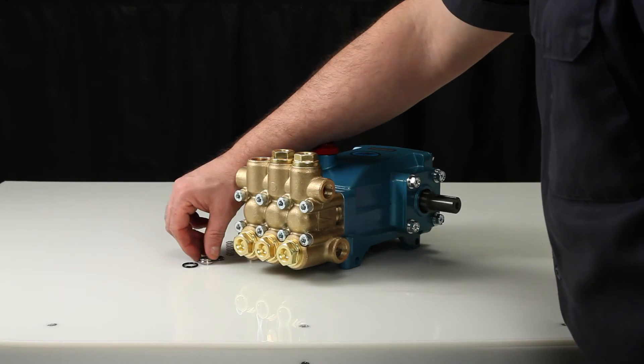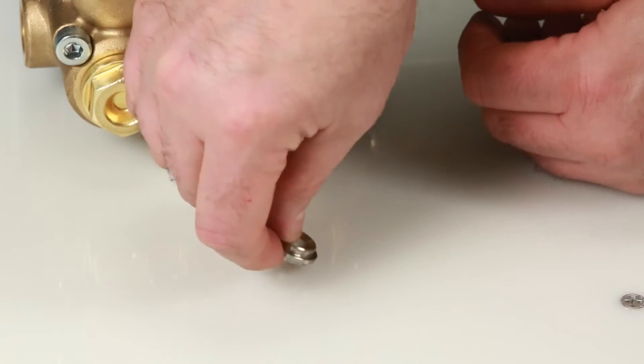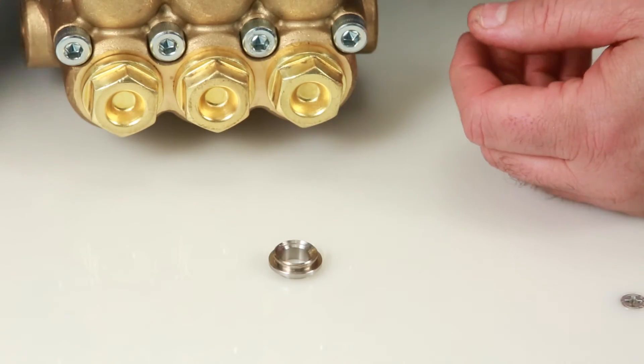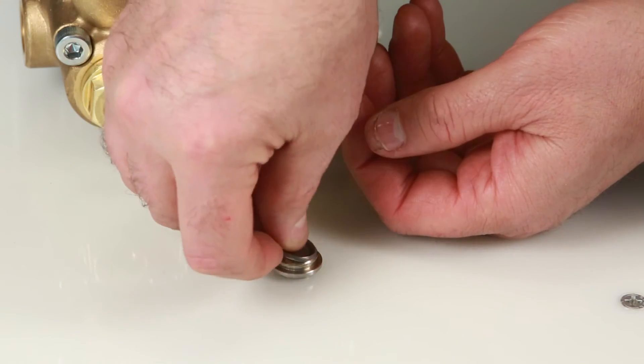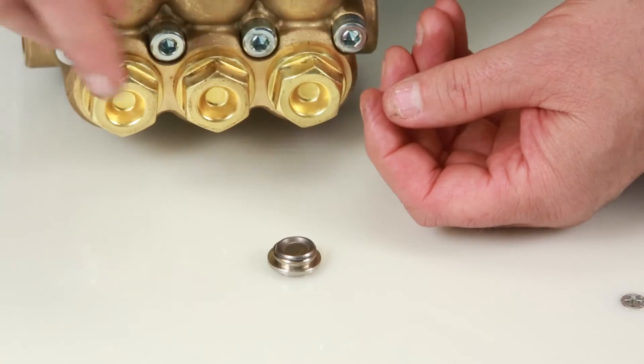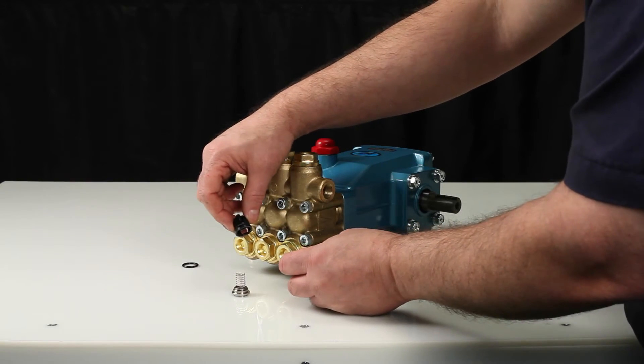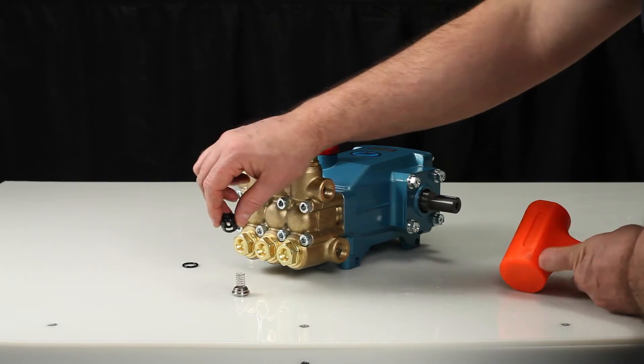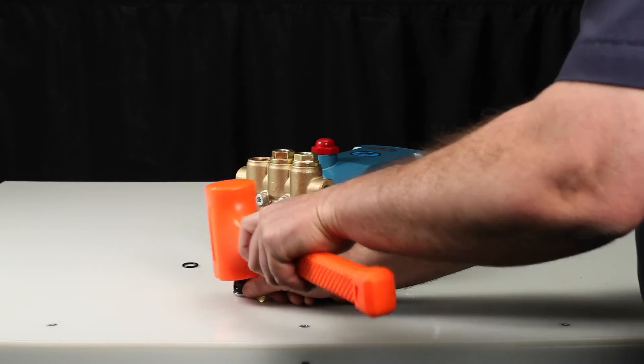To reassemble the valve assembly, place the valve seat on a flat surface with tapered surface facing up. Place valve onto valve seat with tapered surface facing down. Place the spring on the valve, followed by the spring retainer. Using a rubber hammer, lightly tap into place.